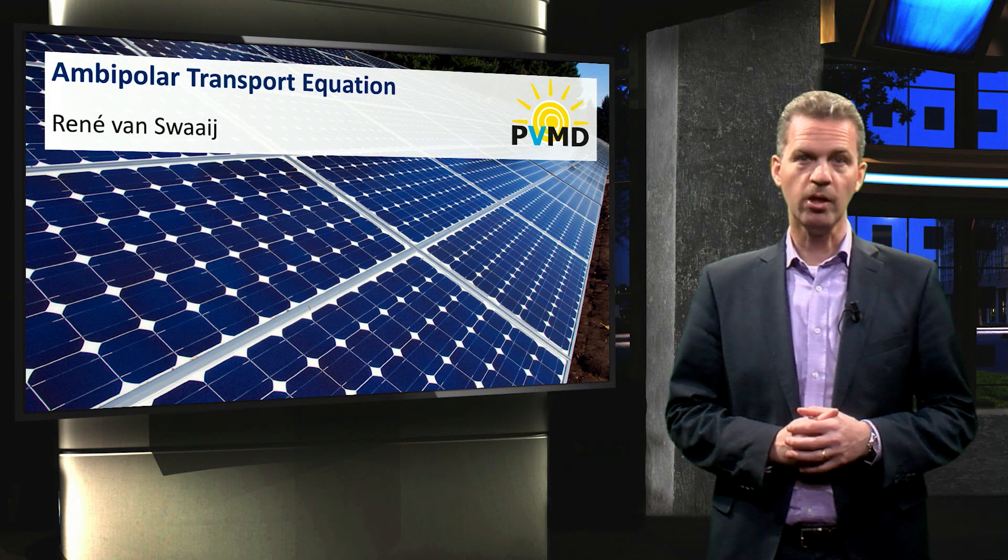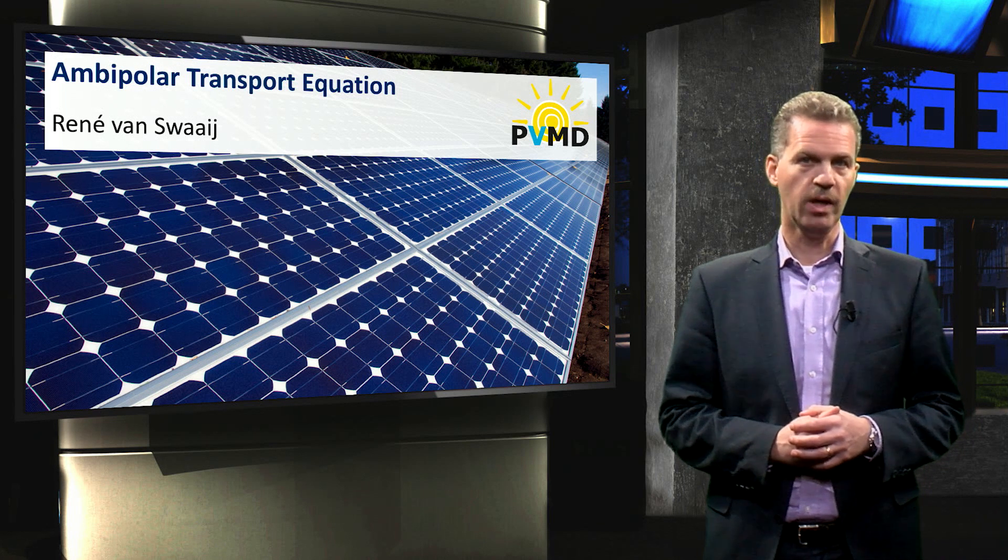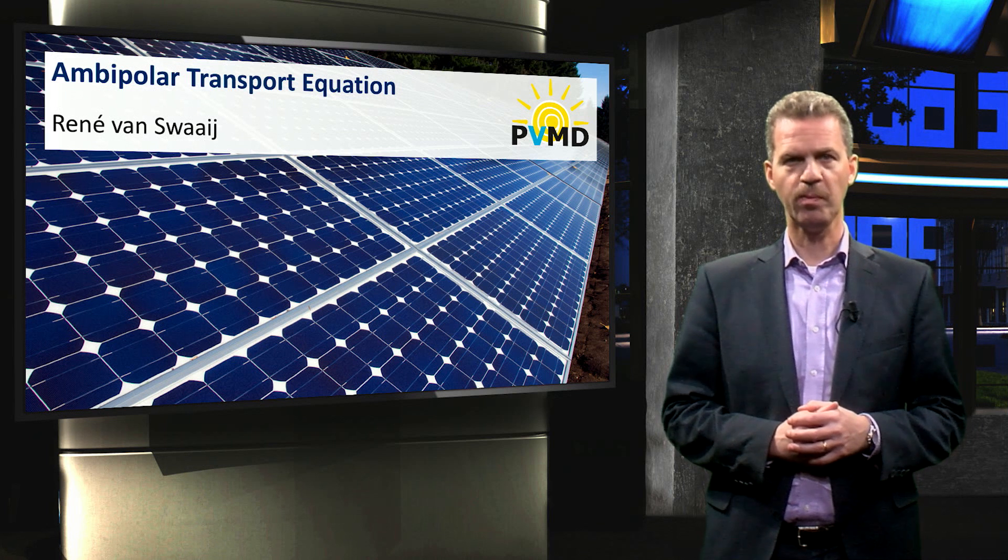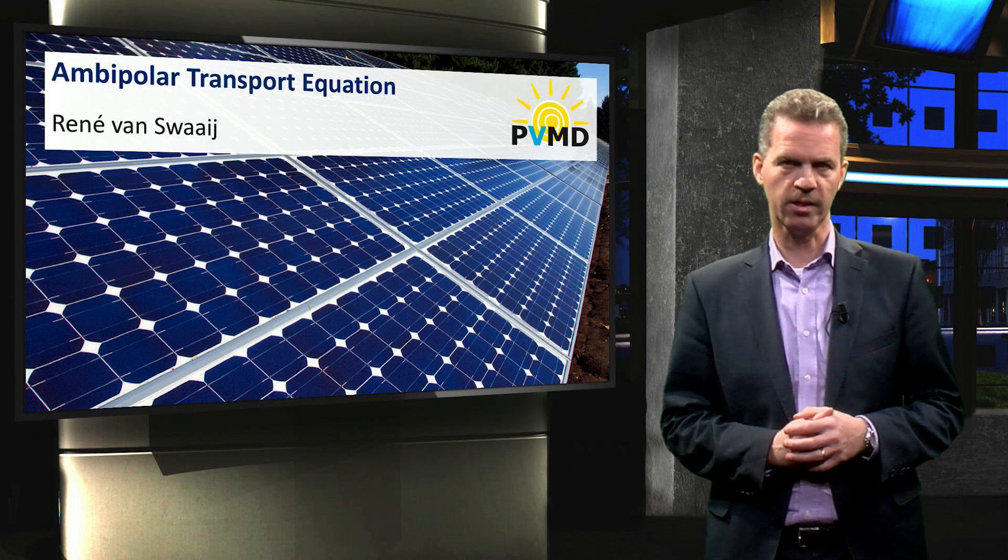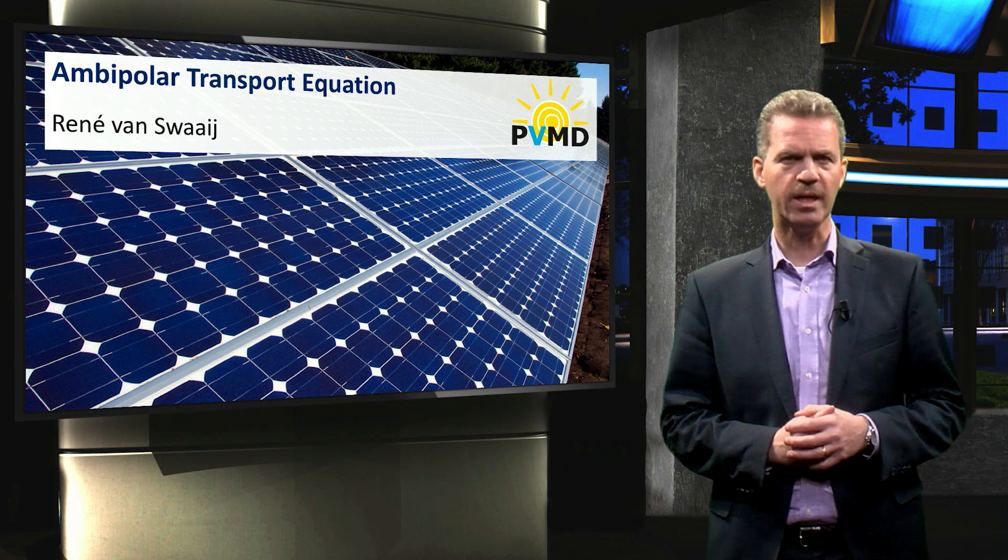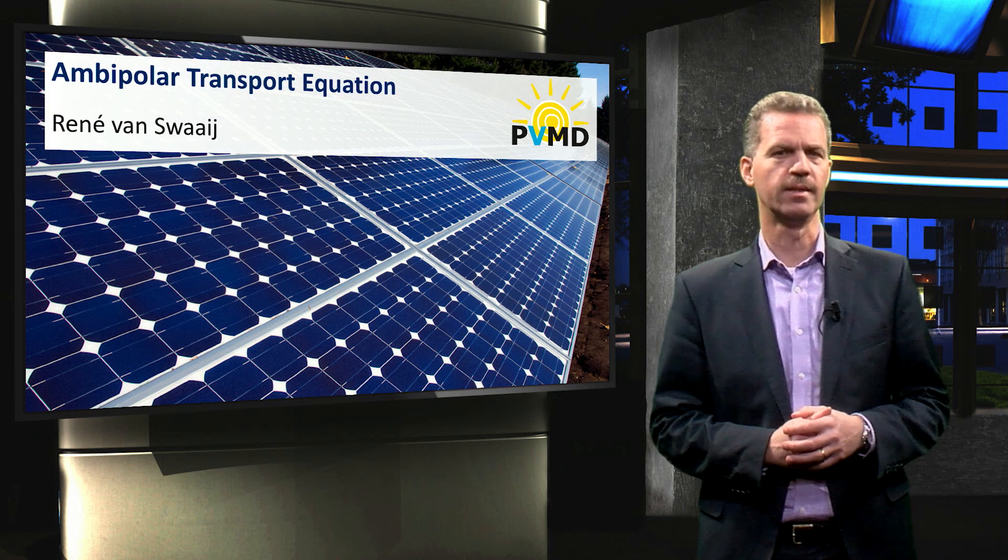It's hard to keep track of charge in a solar cell. Generation, recombination and spatial movement are all occurring at the same time. How can we keep track of all these processes?